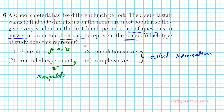Population survey involves surveying the entire population, but we are not questioning the entire school population in this study. We are just focusing on the first lunch period to get an idea as to which menu item is most popular. Since we are using just a fraction of the entire population to extrapolate to the entire population, this is a sample survey. Remember: survey is collecting information, experiment is manipulating your population, observation is inspecting it as it is. Sample uses a small fraction of randomly selected elements from the entire set, whereas population involves surveying the entire population.